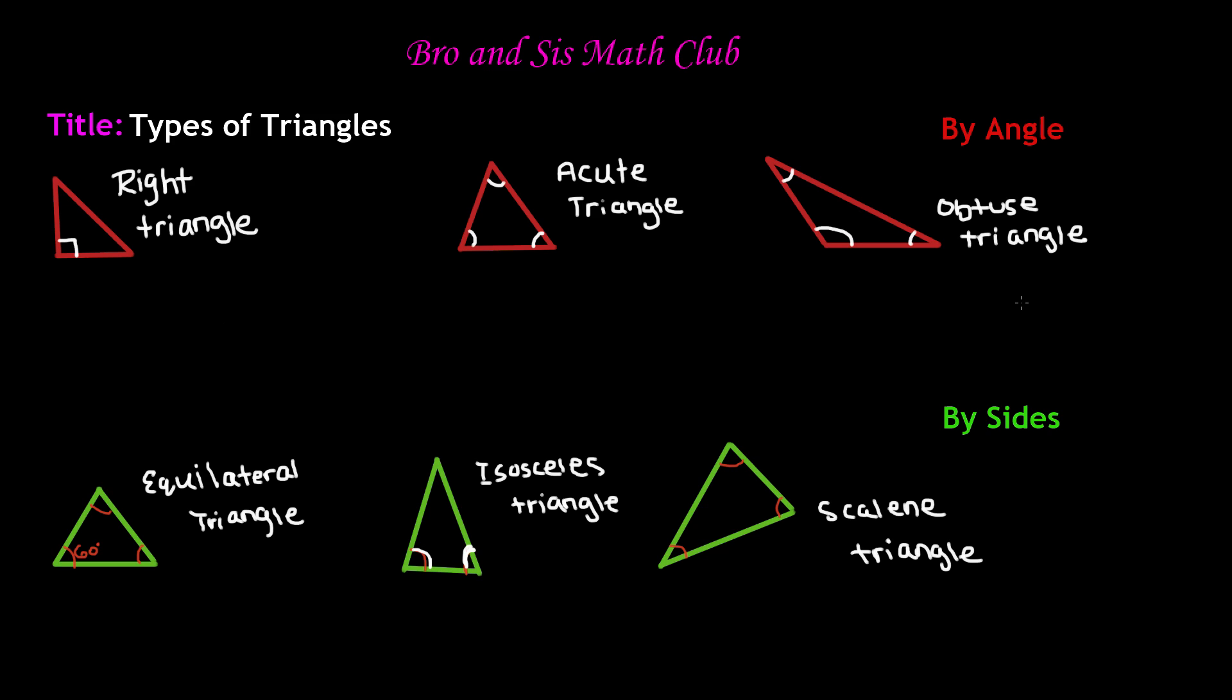The triangles are distributed into two categories. The first one is based off of the angle and the next one is based off of the lengths of the sides. So each of these has three basic triangles.